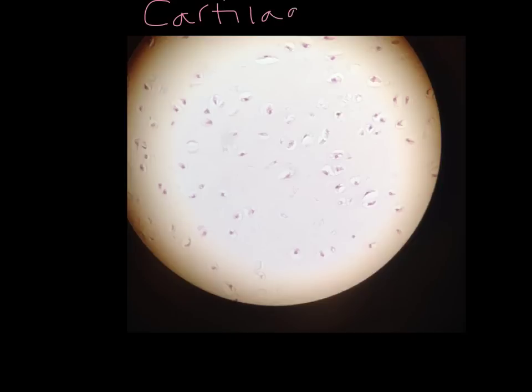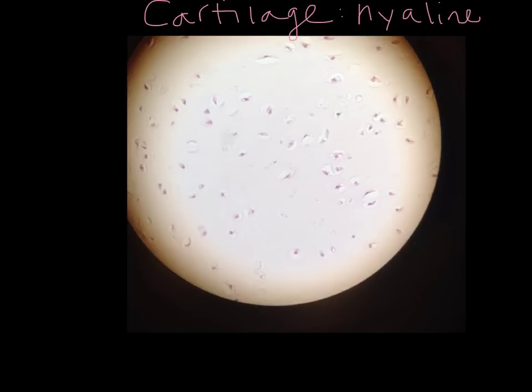Now I'm going to move on to cartilage. There are three different types of cartilage: hyaline cartilage, fibrocartilage, and elastic cartilage. We looked at two — hyaline cartilage and elastic cartilage. The type of cartilage we're looking at here is hyaline cartilage. It is the most common type of cartilage in the body. It's found in your nose, on the surfaces of articulations where joints or bones come together, at the ends of long bones, and at the sternal ends of the ribs.